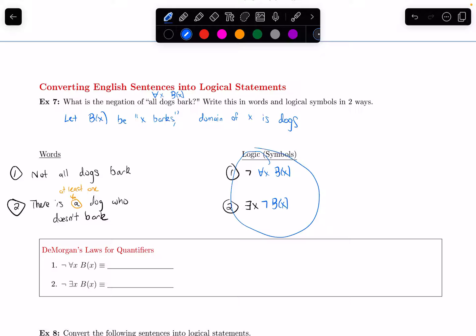So these two ways of expressing this negation are equivalent. What we've just found is the negation of for all X, B of X is the same thing as saying there exists an X such that the negation of B of X. Or there exists an X such that B of X does not happen. There exists a dog who does not bark.